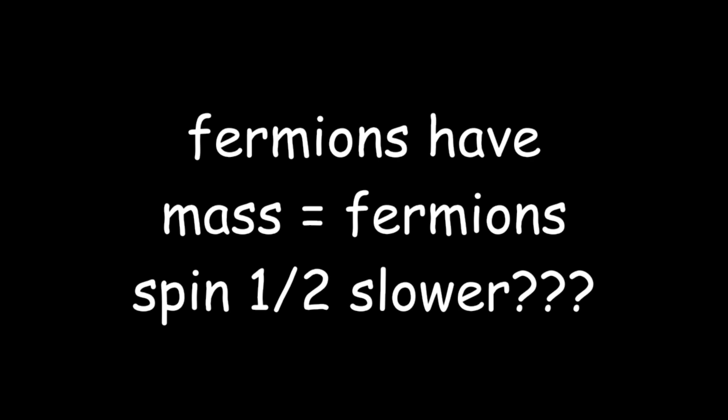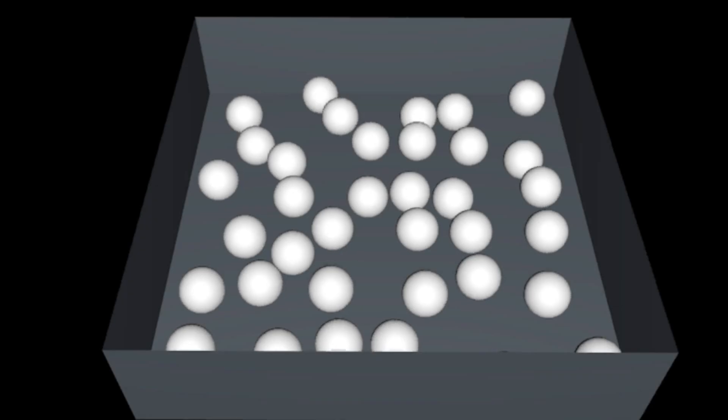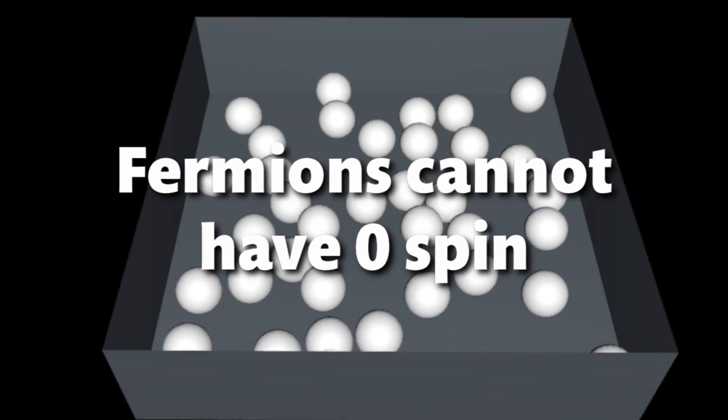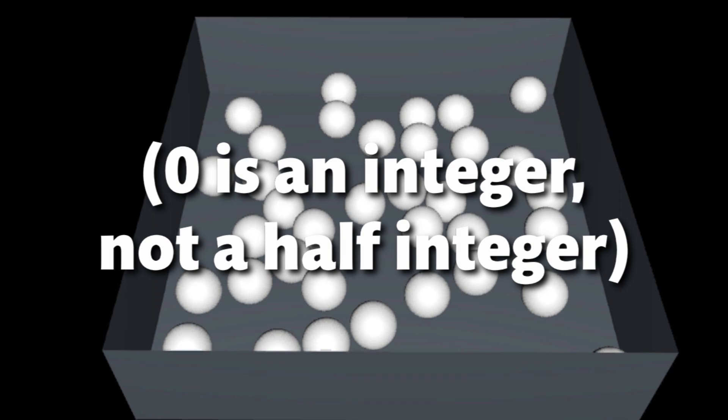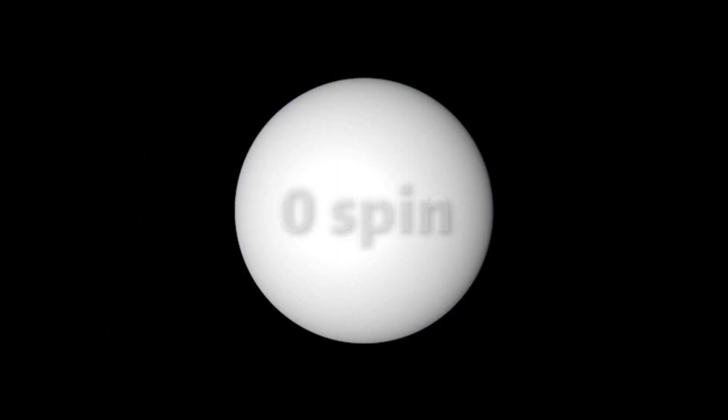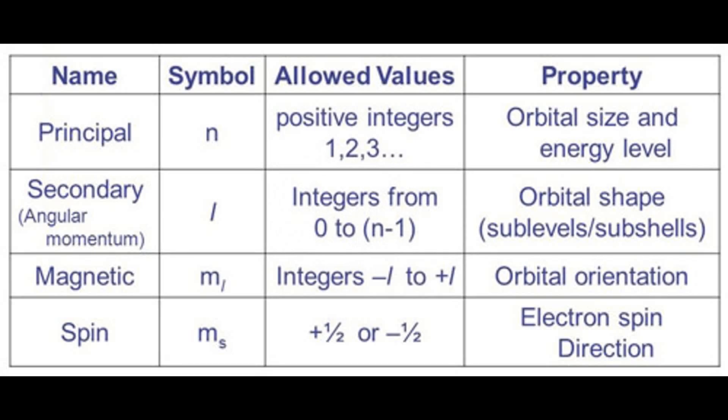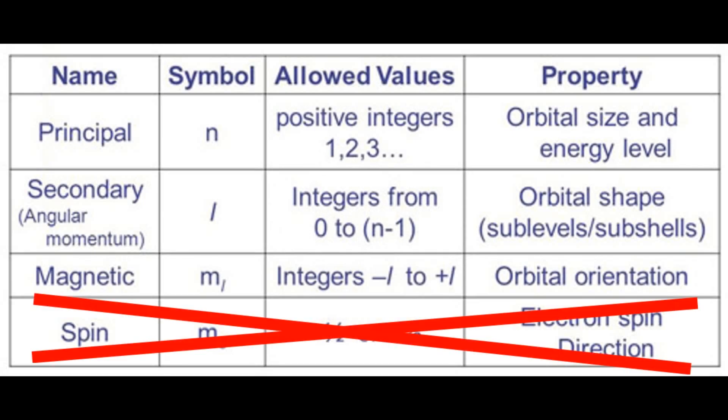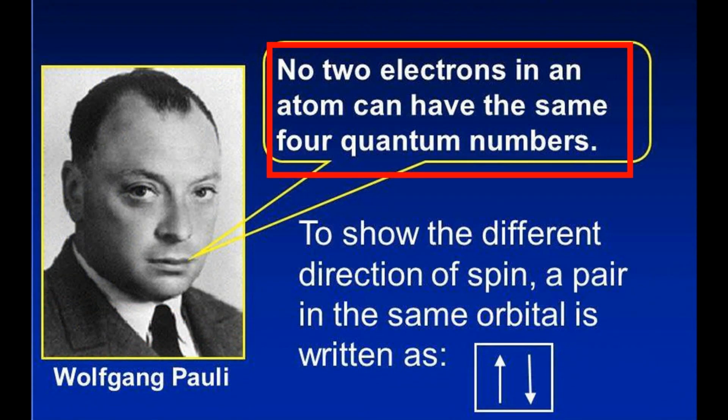But how does this relate to the fact that fermions can only be half-integers? Well, that is because fermions cannot have zero spin, since zero is not a half-integer. If a fermion were to have zero spin, then there would not be enough information describing the particle to ensure that its information is completely unique.